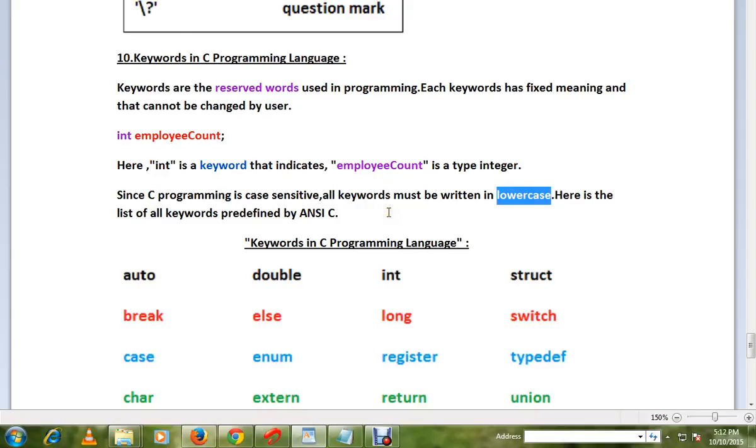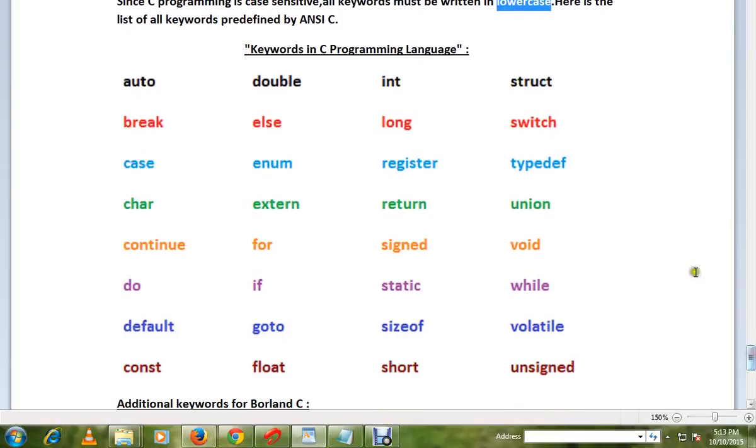So here you can see a list of keywords that are available in the C programming language: auto, break, continue...